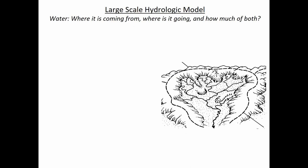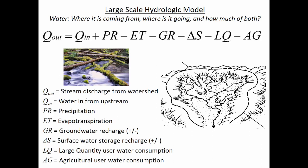Let's think on a broad scale. For a catchment like this, in a large hydrologic model, what we're trying to address is where is the water coming from, where is it going, how much of both — in other words, it's a mass balance question.